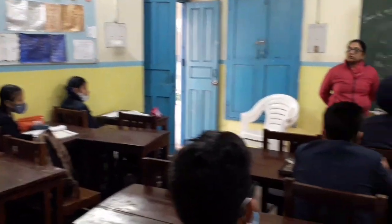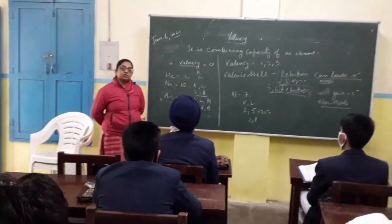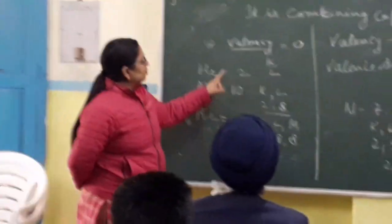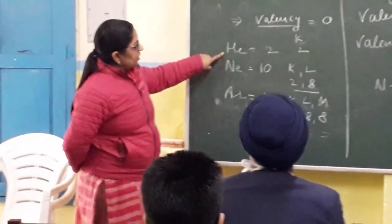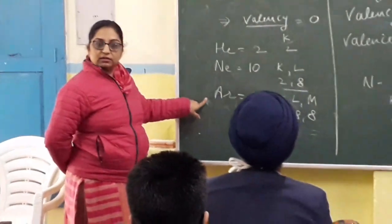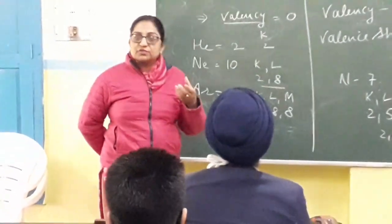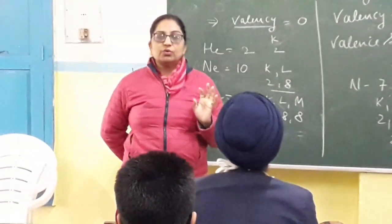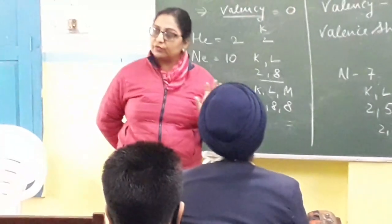There are so many elements. Few of them have zero valency. Out of these, few examples are shown here: helium, neon, argon. The ones which have zero valency are those elements whose last shell is fully filled.